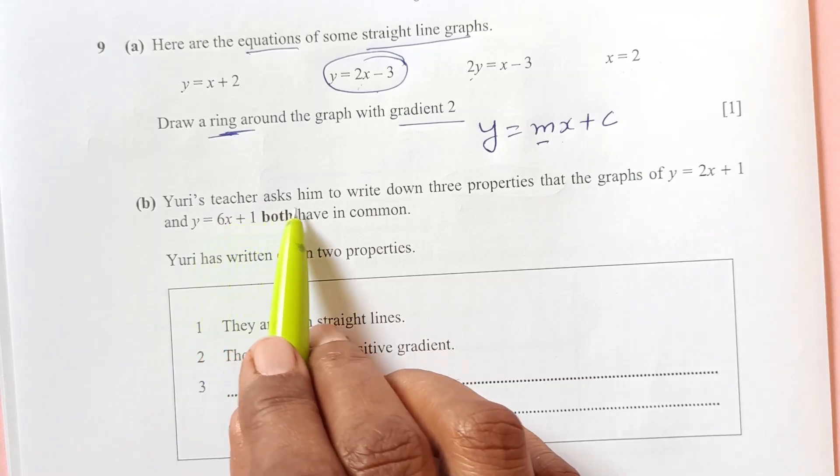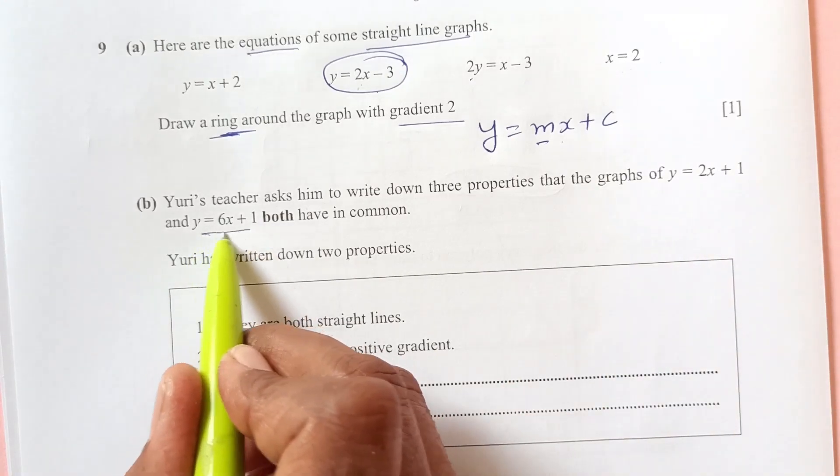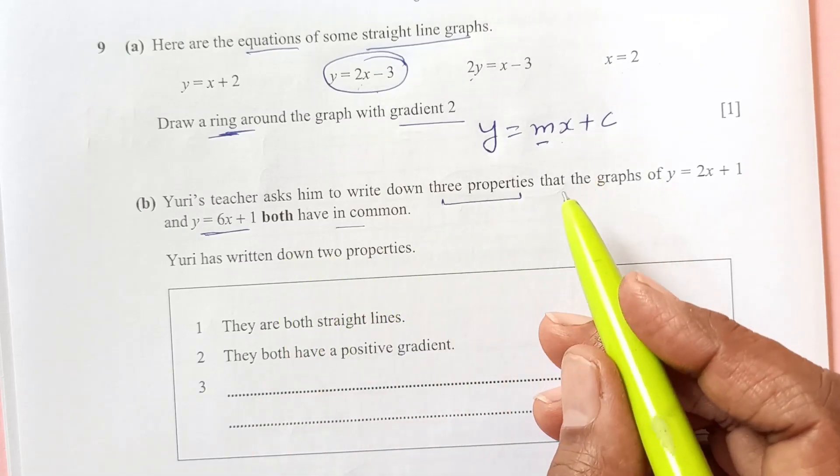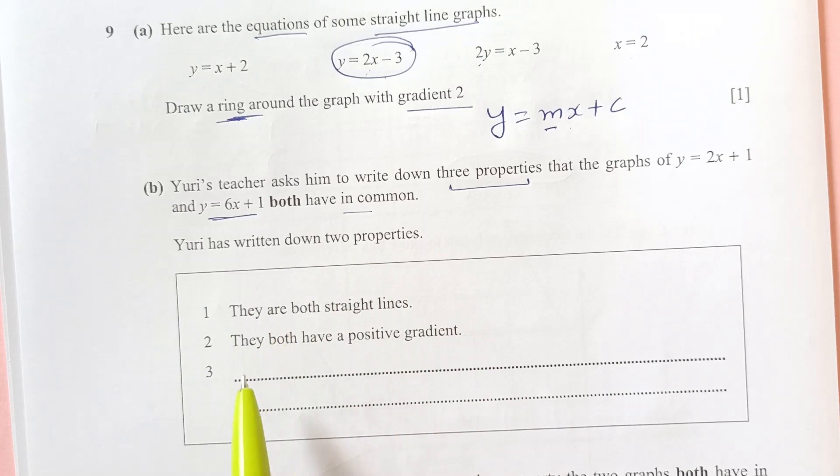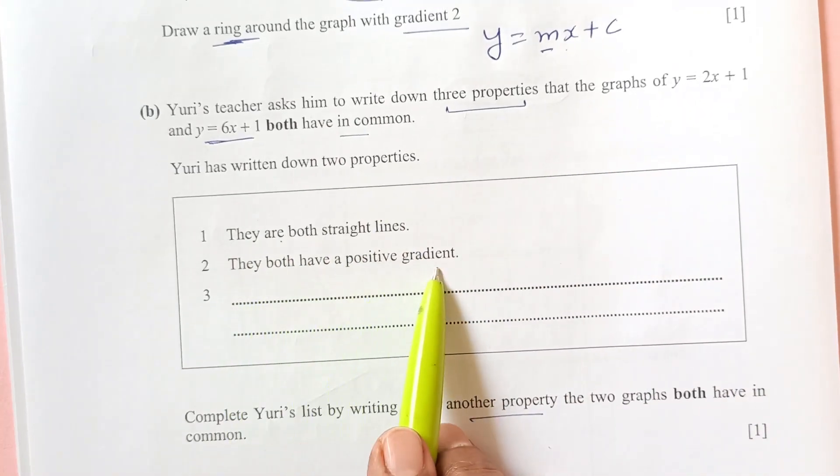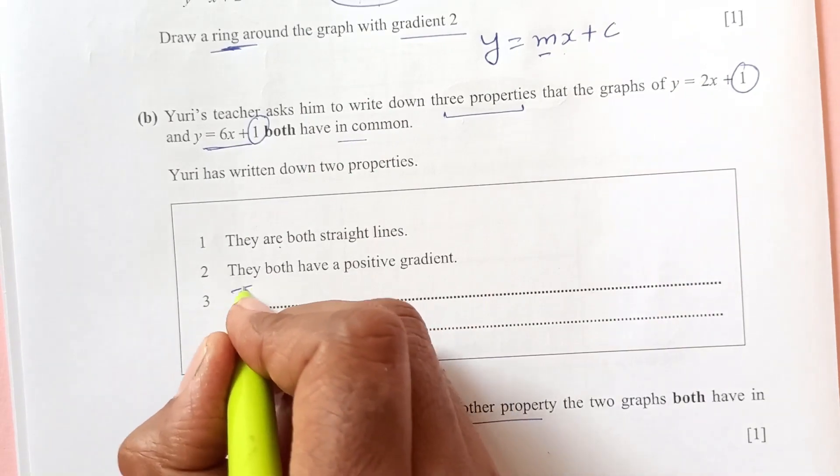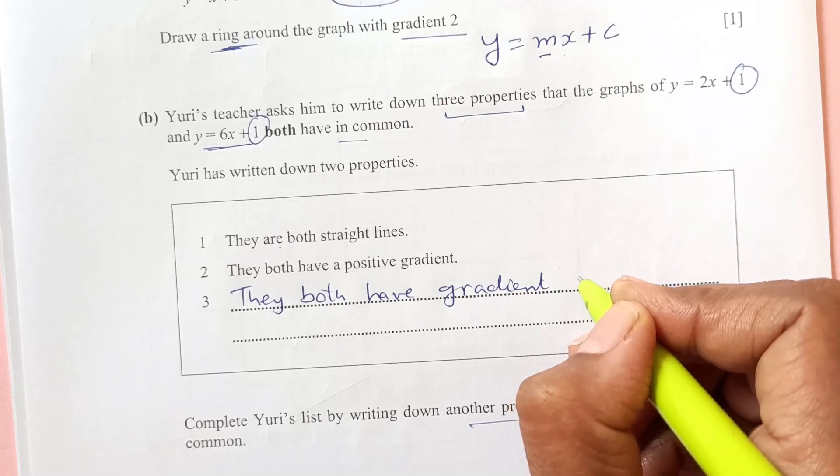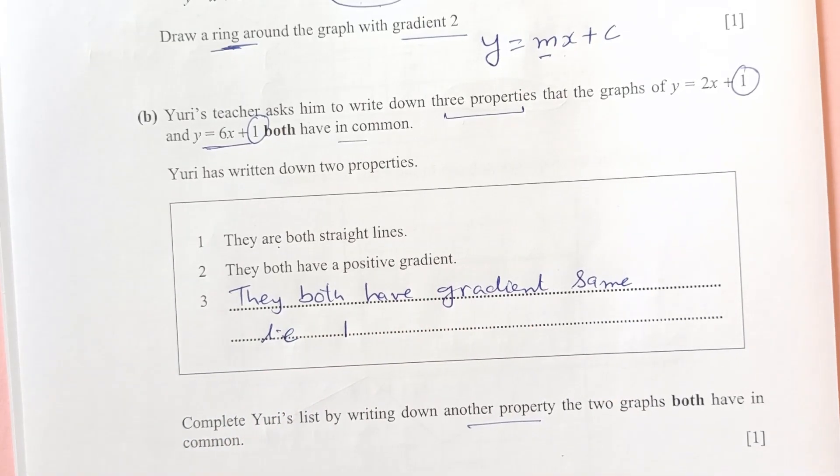Now, part b, Yuri's teacher asked him to write down the properties that gradient of y equals to 2x plus 1 and y equals to 6x plus 1 both have in common. Write down 3 properties. What are the properties that is same? Yuri has written 2 of the properties. We need to write down the third one. Complete Yuri's list by writing down another property. They both have straight lines. That's true. They both have positive gradient. That's true. This has gradient 2 and this has gradient 6. Now, what else is common? You see this one. 1 and 1 is common. So, that means both have equal y-intercept or y-intercept same, that is 1. 1 is the y-intercept of both lines. So, that's it for number 9.